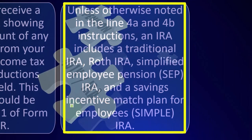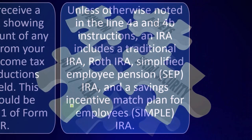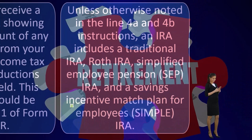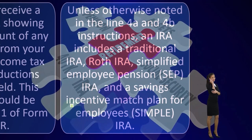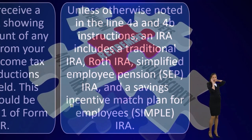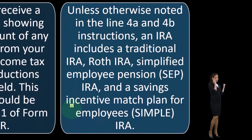Unless otherwise noted in the line 4A and 4B instructions, an IRA includes a traditional IRA, Roth IRA, simplified employee pension SEP IRA, and savings incentive match plan for employees — a SIMPLE IRA.